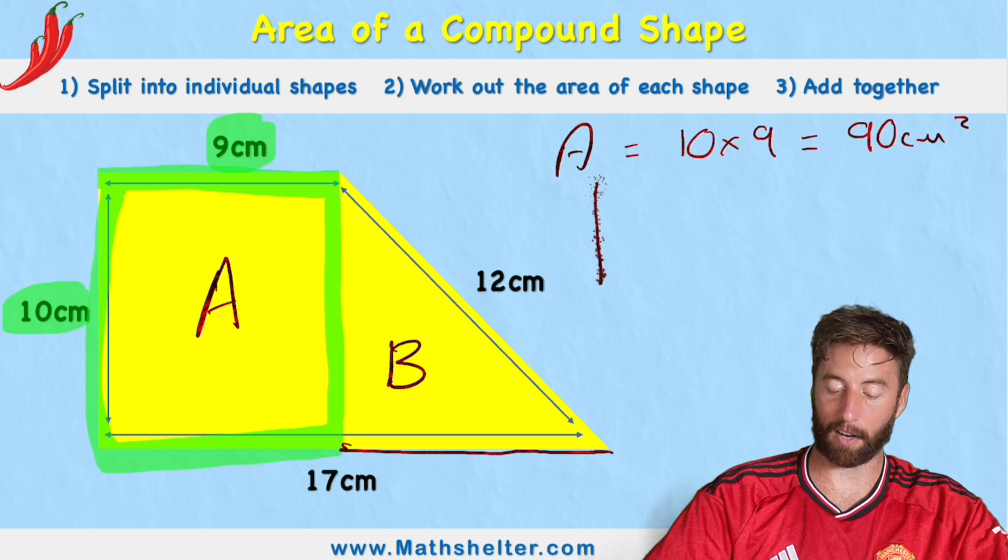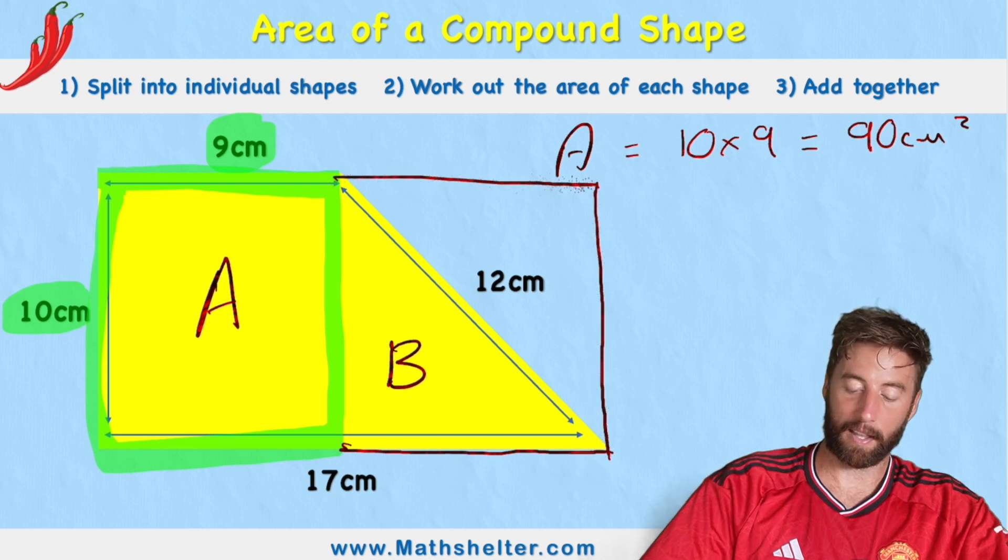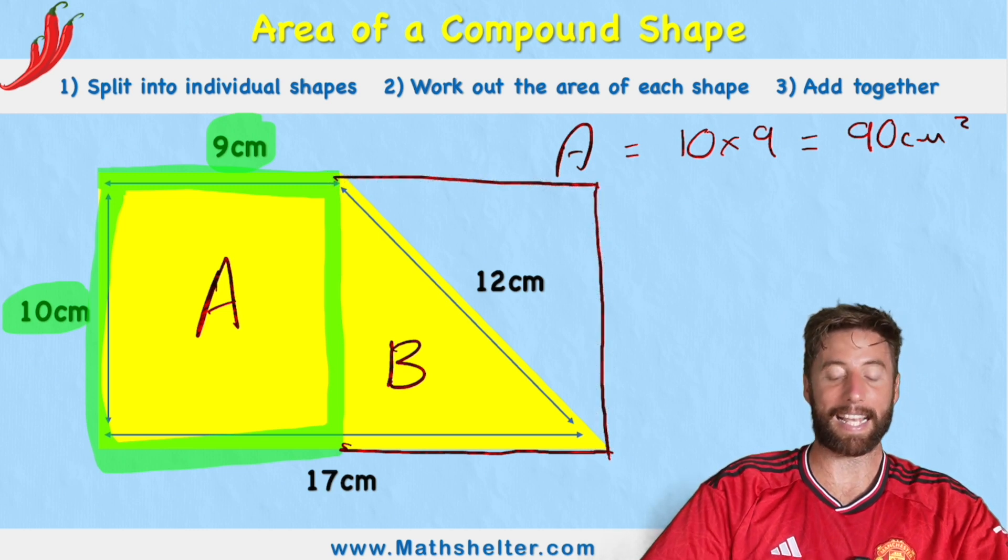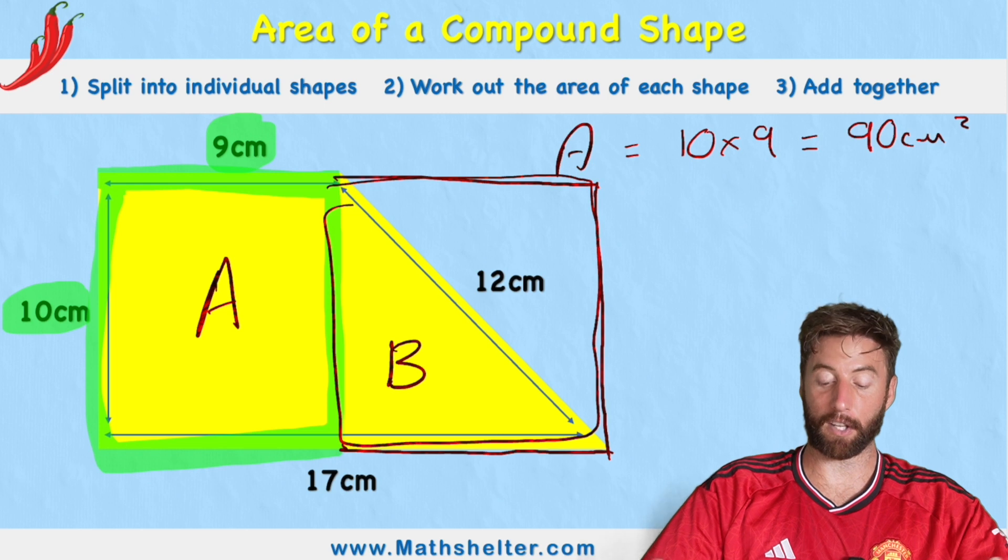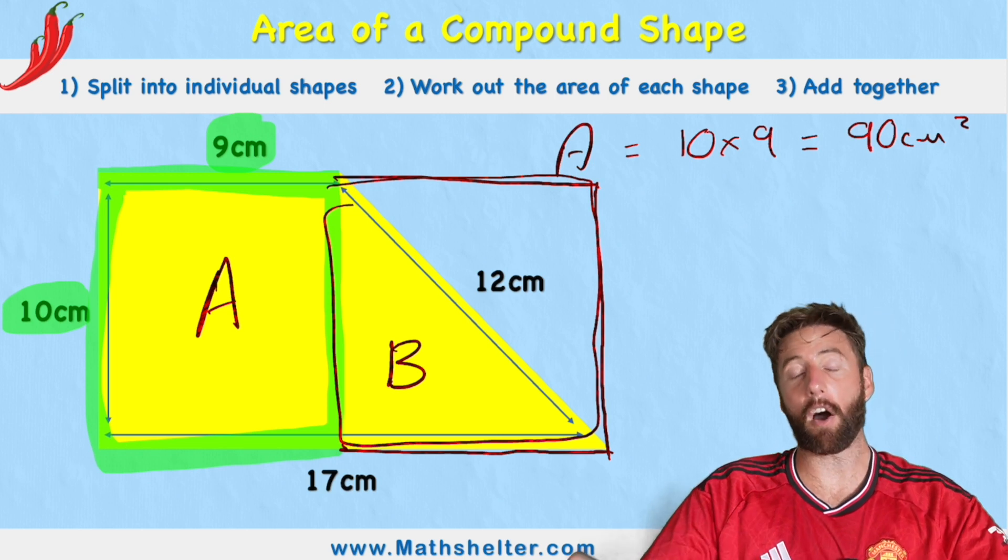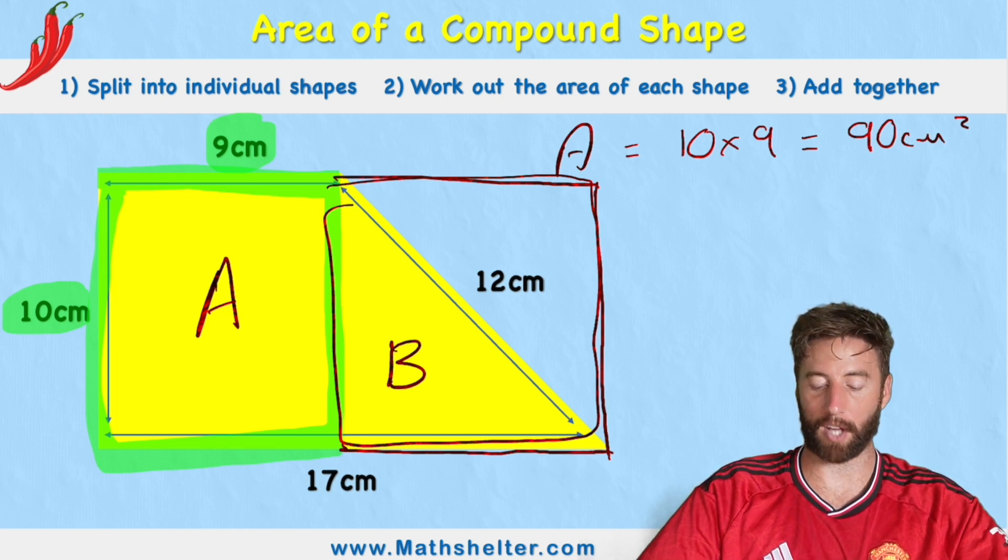Well, what we need to realize is a triangle is exactly half of the rectangle that it sits in. Imagine if I built a rectangle around it like this. Shape B is half of this whole big rectangle. So if I find the area of this rectangle and then half it, I will get the measurement of shape B.